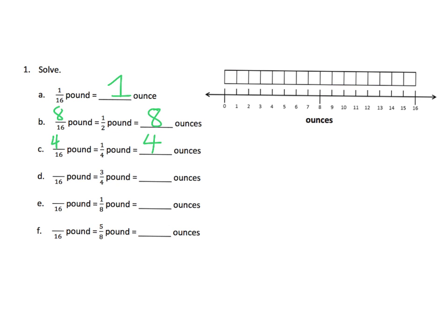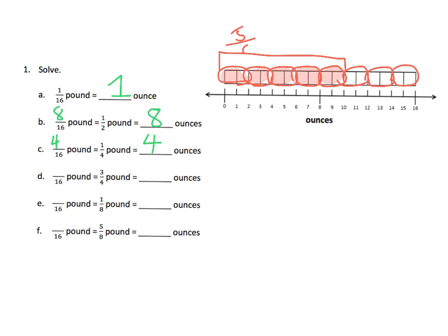The process for converting pounds to ounces is you take that pound and chop it up into whatever the denominator is. Let's do five eighths. Five eighths of a pound means we take our pound and chop it up into eight equal sized pieces — one, two, three, four, five, six, seven, eight. We want five eighths of those. Five eighths of a pound is equal to 10 ounces, because each eighth equals two ounces: two plus two plus two plus two plus two equals ten. So five eighths of a pound is equal to 10 ounces, which is 10 sixteenths of a pound.